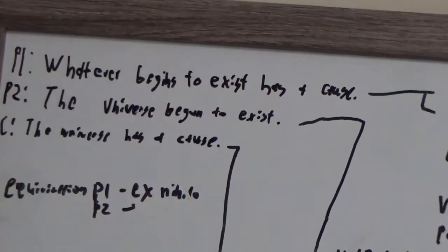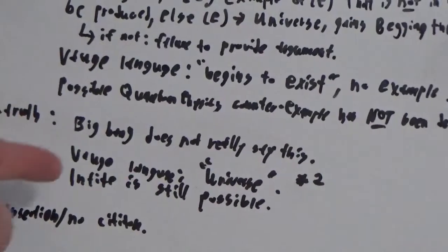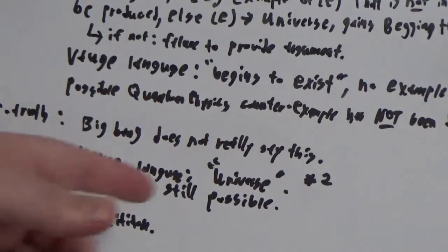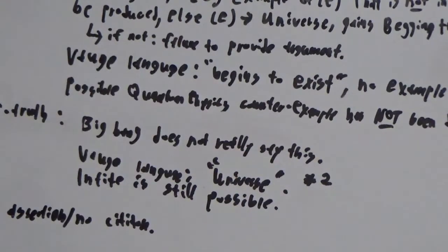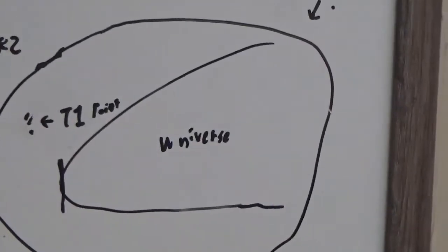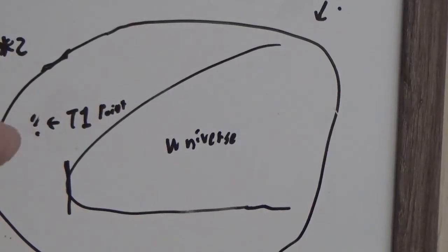The universe began to exist. Well, it's a half truth, because the Big Bang doesn't really say that. There's vague language on the word universe. What do we mean by the word universe? Here we have the universe. We have the T1 point. We don't know what happens before that, or if there is a before.